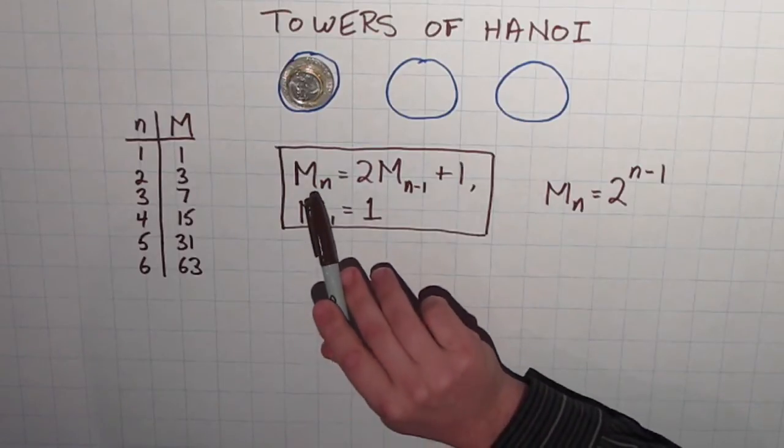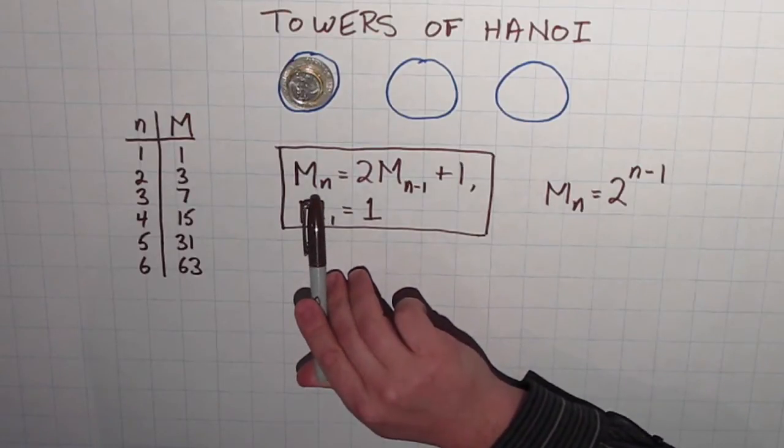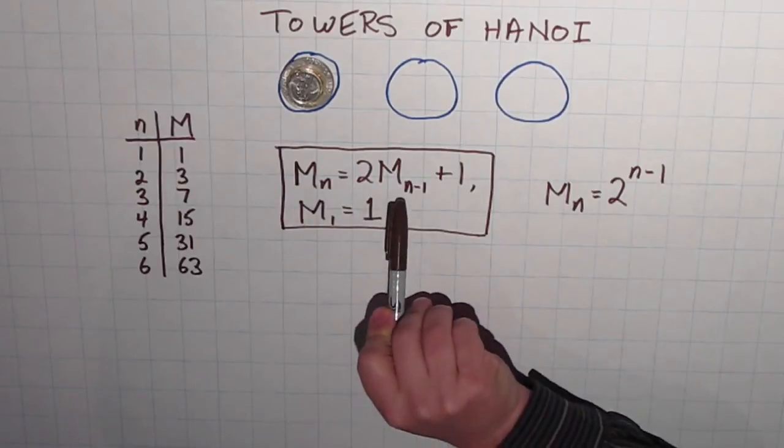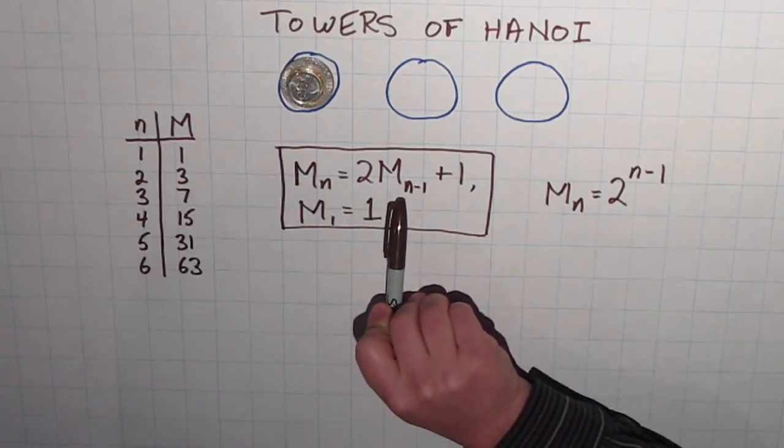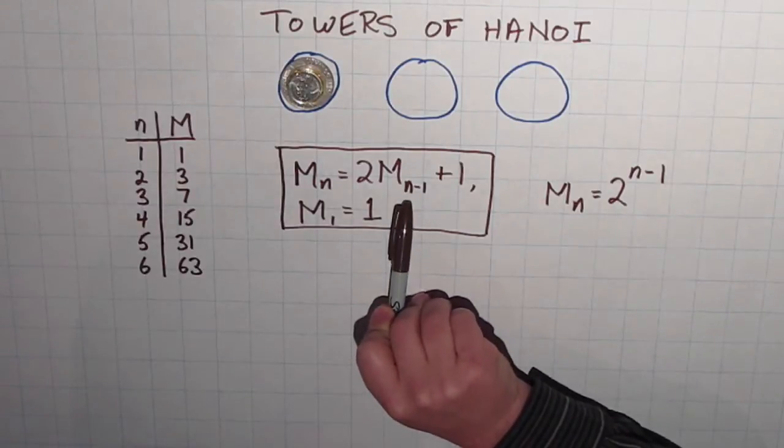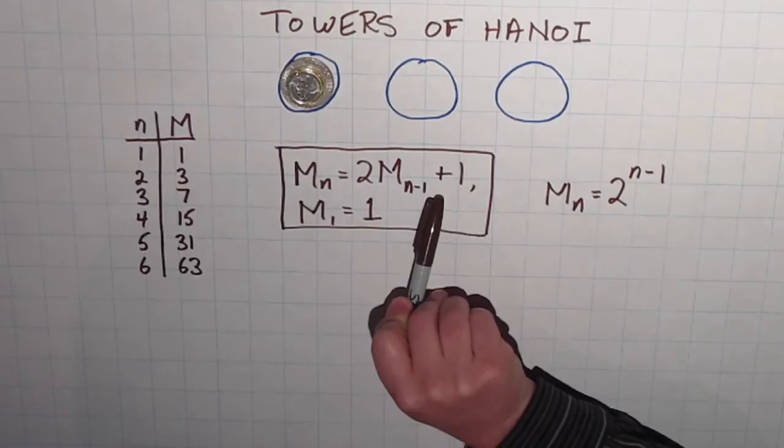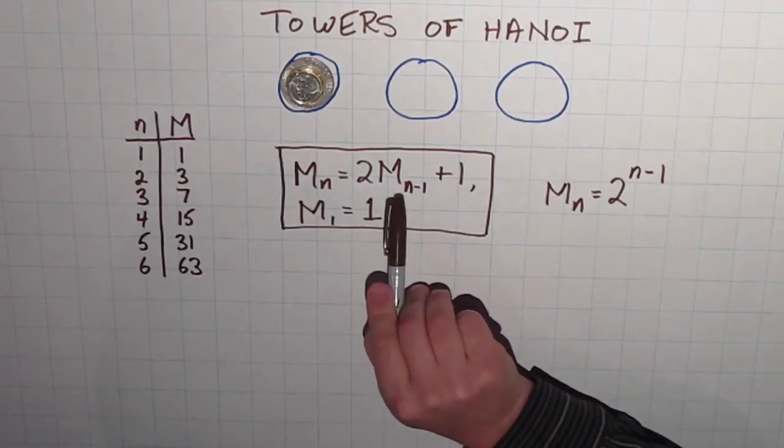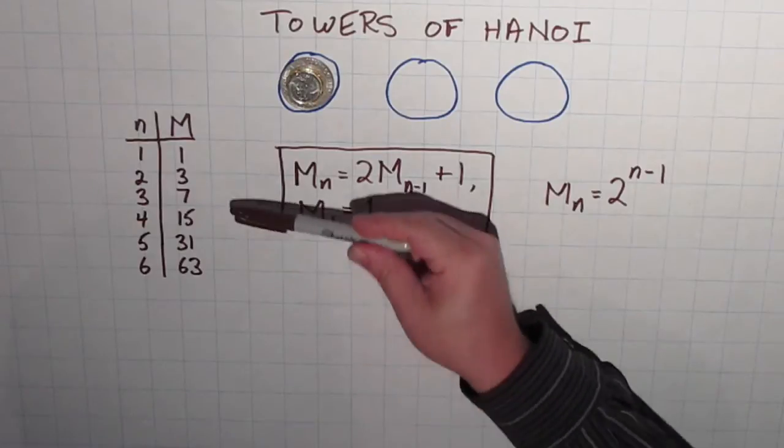For instance, if I wanted to know how many moves it took to move three coins, I need to take two and multiply it against the number of moves it takes to move one less than three, which is two coins, and add one to it. So to find the number of moves for three coins, it's two times the number of moves to move two coins plus one, and you can see that works over here.